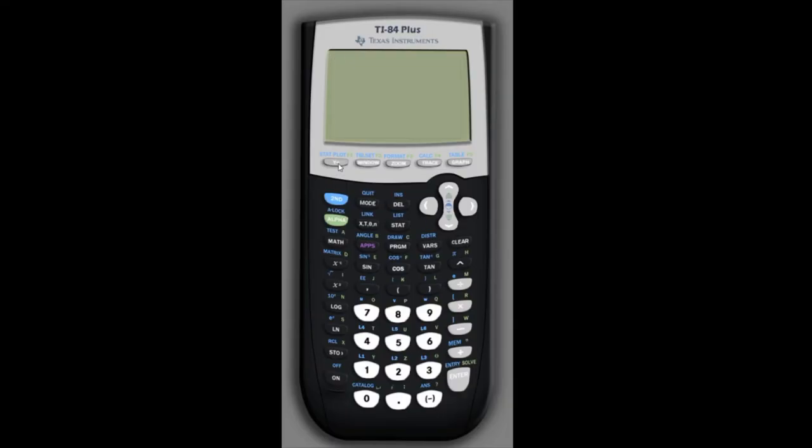On the calculator, we need to go under y equals to plot both equations. So first we'll type in 241,409 times in parentheses 1 plus 0.008, or of course we could just type 1.008, raised to the power of t, or in our case x.